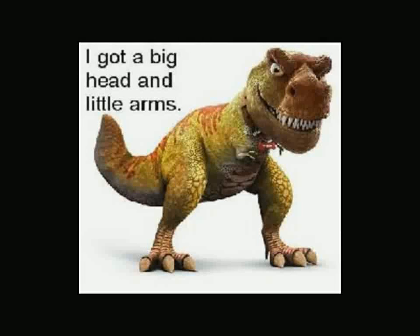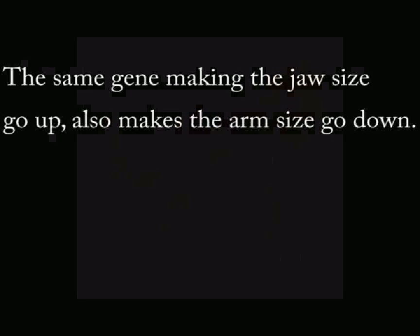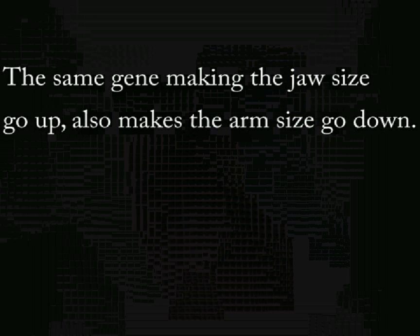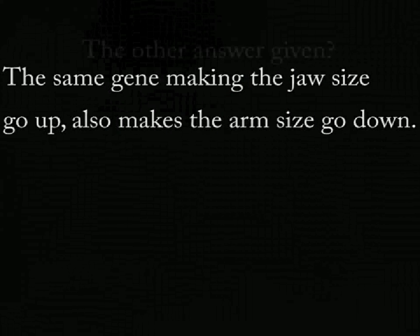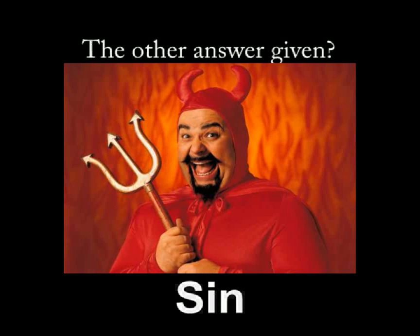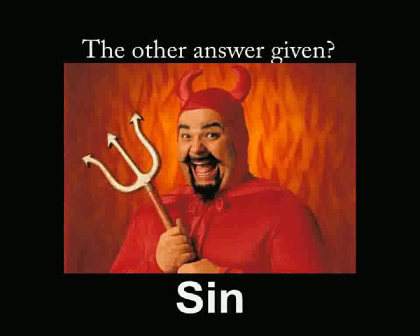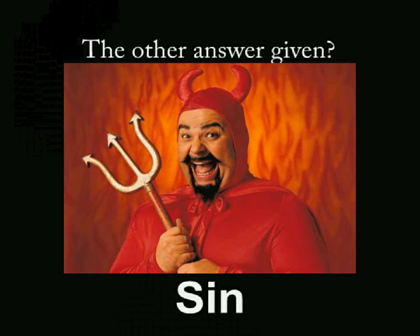Unfortunately, the gene which is controlling jaw size is also controlling arm size in an inverse proportion. So to get a really big jaw, you have to have really tiny arms. That could be one answer to why T-rex had little arms — because it was selecting for the super huge jaws and wasn't really using its front arms.